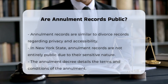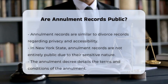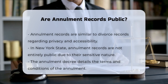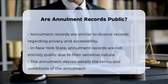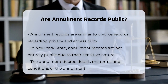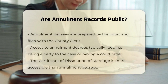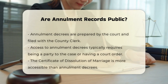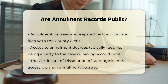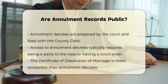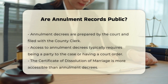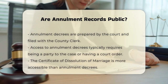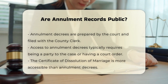In New York State, for example, divorce and annulment records are not entirely public due to their sensitive nature. When it comes to annulments, the actual annulment decree — the document detailing the terms and conditions of the annulment — is typically prepared by the court and filed with the county clerk. However, this document is not freely available to the public. To obtain a copy of an annulment decree, you usually need to be a party to the case or have a court order.